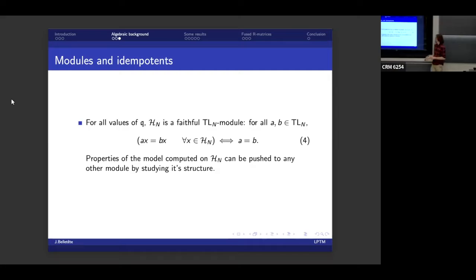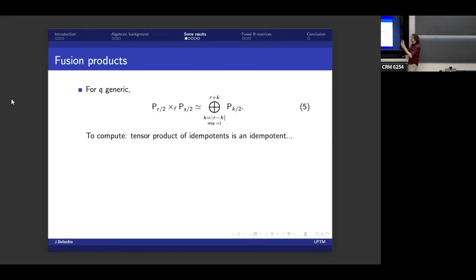And now, probably the important point about why we're doing this. So for all values of q, whether it's generic or root of unity, the module that we have constructed, h_n, it's a faithful Temperley-Lieb module. So for any a and b in Temperley-Lieb, if ax is equal to bx for every state x, then a is equal to b. So what it is saying is that properties of the model, whether it's the eigenvalues, the partition function or whatever, I can compute that on the representation h_n. And then I can extract this information and obtain the solution of any other model, provided that I can find its algebraic structure.